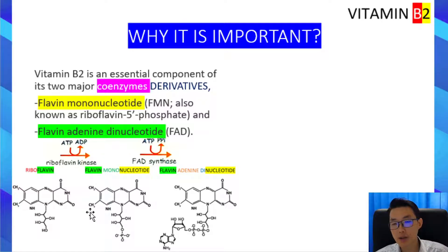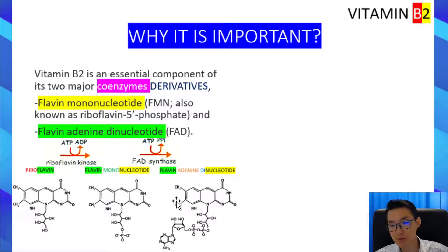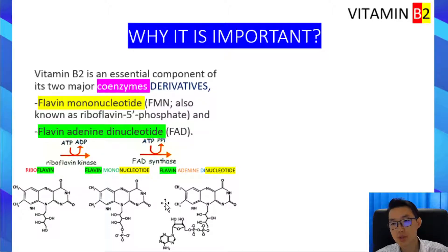This diagram shows how riboflavin, which is the free form of vitamin B2, is converted to flavin mononucleotide by the enzyme riboflavin kinase. Flavin mononucleotide is then further converted into flavin adenine dinucleotide by the enzyme FAD synthase. This is just for information purposes only, so that we understand how riboflavin becomes its two coenzyme derivatives.